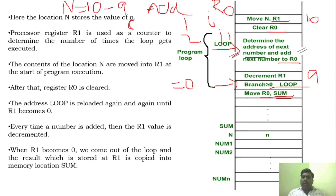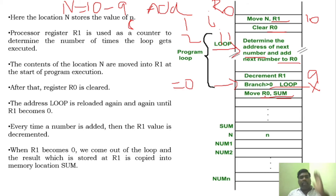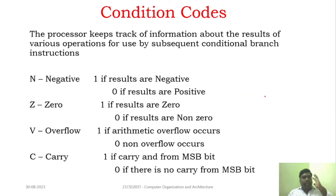Like that, it goes on — this process continues until R1 becomes 0. If this condition is not satisfied, it will move to the next instruction out of the loop. That out-of-loop instruction is nothing but the final value of R0 will be saved to sum. This is called branching.